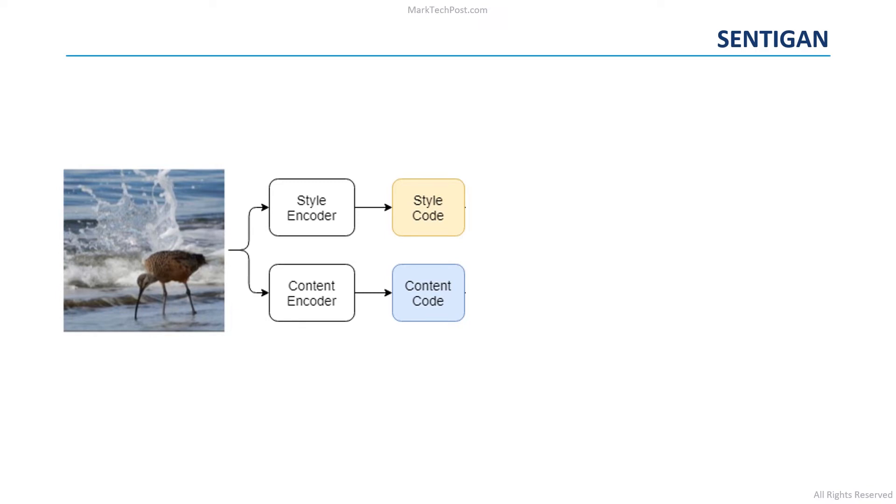Moreover, an object-level style encoder is also used to obtain the style code of each object present in the image. The content code preserves the spatial-aware content information of the object, such as textures and edges. The style code preserves instead the global style information of the object, such as the overall color. Thanks to the style encoder, after the training process we will have a latent distribution from which we can generate the style of new data, which have similar characteristics to the style of the data of our dataset. At the same time, thanks to the content encoder, we will obtain a latent distribution useful to generate new content data. These latent distributions will be useful to train the SentiGAN, as we will see later.